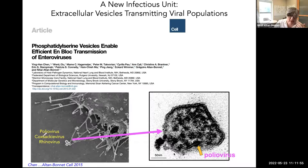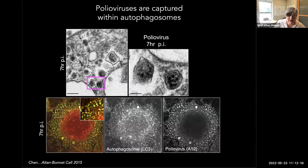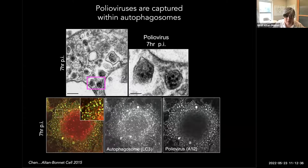What excited us was this phenomenon of extracellular vesicles being used to release these non-enveloped viruses in a non-lytic fashion, and perhaps more significantly, the presence of multiple poliovirus particles transiting and transmitting together from the cell, as opposed to individual freely moving particles. In the case of poliovirus, Coxsackievirus, and rhinovirus, we and others have shown that once they're synthesized in the cell, they get captured in autophagosomes.